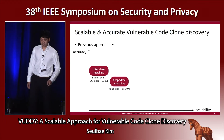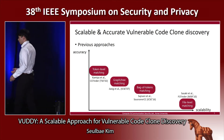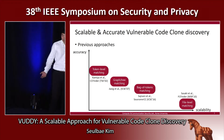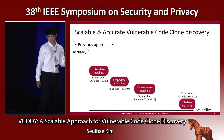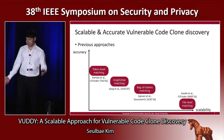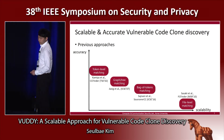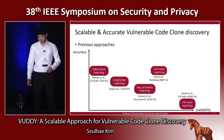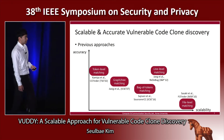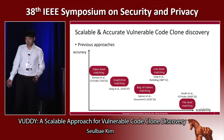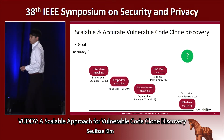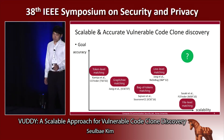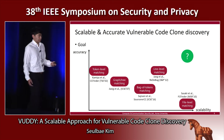Previously, many approaches that tried to tackle this similar problem showed a clear tendency of trade-off between accuracy and scalability. One notable exception is ReDebug, which used a line-level matching technique, but it still had a lot of false positives. So our goal is to reach the area where we can achieve both high accuracy and high scalability simultaneously.